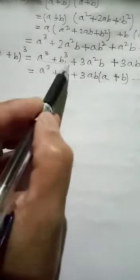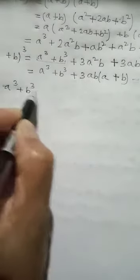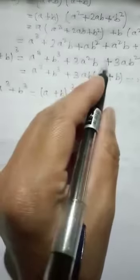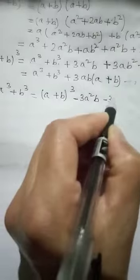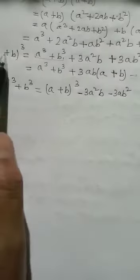From this formula we can also produce another formula for a³ + b³. We transfer the two middle terms to the other side. From (a+b)³ = a³ + 3a²b + 3ab² + b³, we rearrange to get a³ + b³ = (a+b)³ − 3a²b − 3ab². This is the first form of a³ + b³.